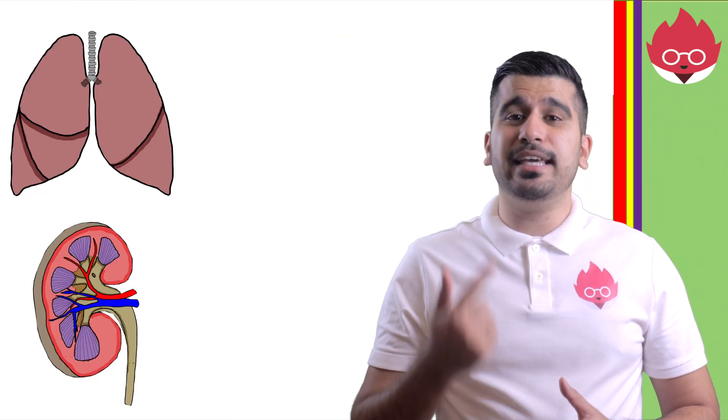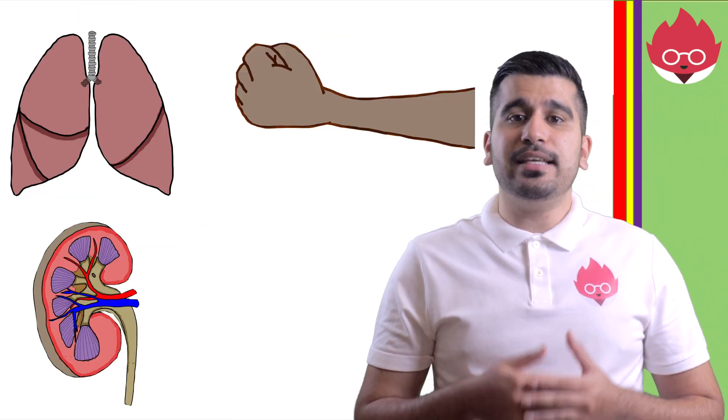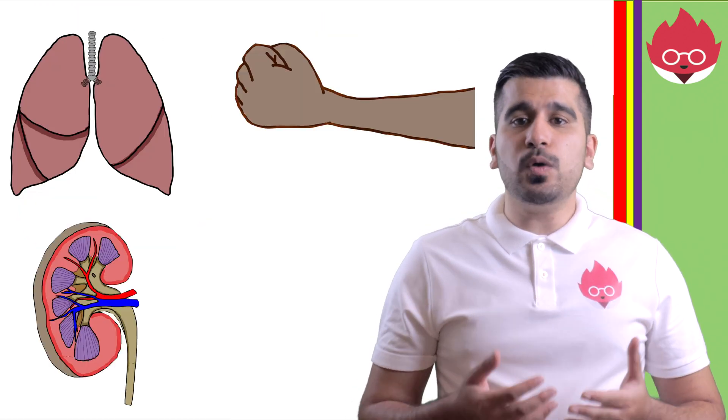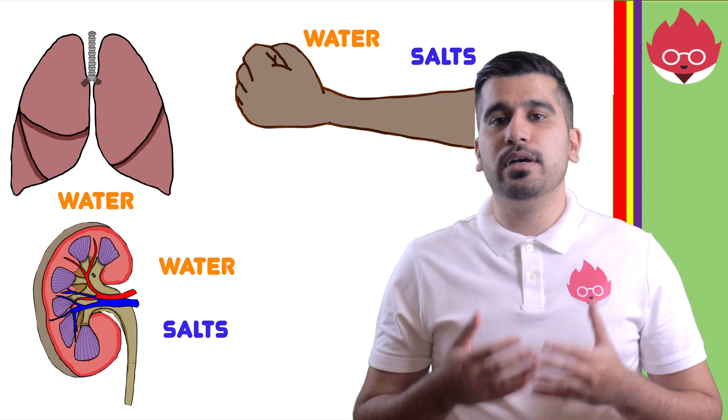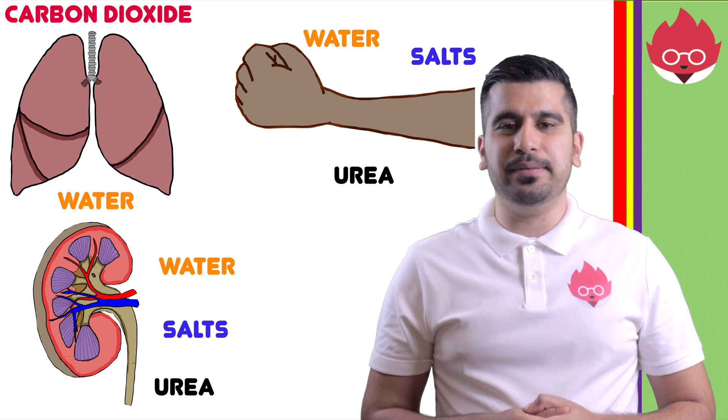In animals, there are three main excretory organs: the lungs, the kidneys and the skin. They secrete salts, water, carbon dioxide and urea.